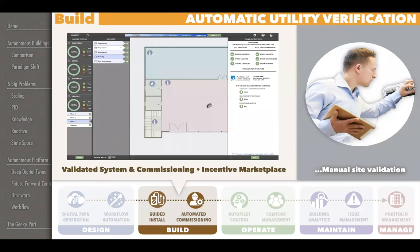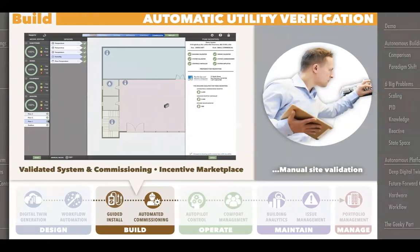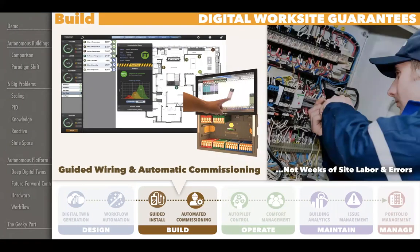The next piece is working with utility companies to actually connect up the incentive marketplace. Once you have a description of your building and your systems, it can connect you up to that incentive marketplace where utilities today feel like people aren't making use of the incentives that are there — and that's unfortunate, because their whole job is to incentivize. That guided wiring and automatic commissioning is another point of savings, since we're currently spending a lot of time on manual commissioning and it's very error-prone.